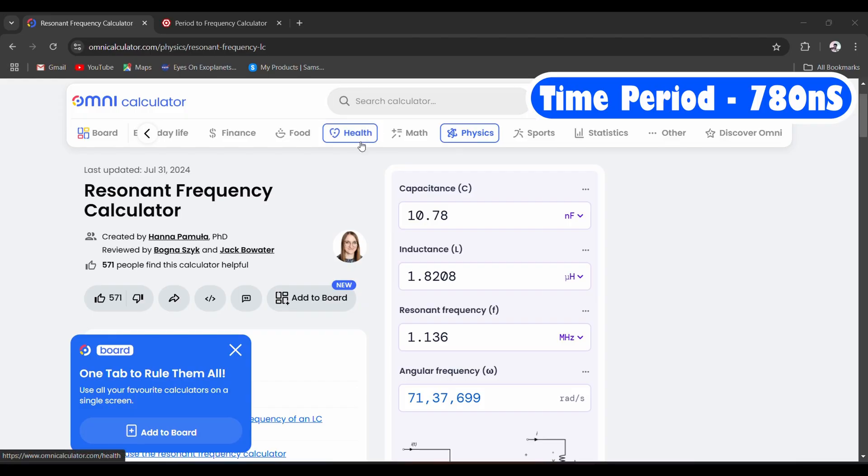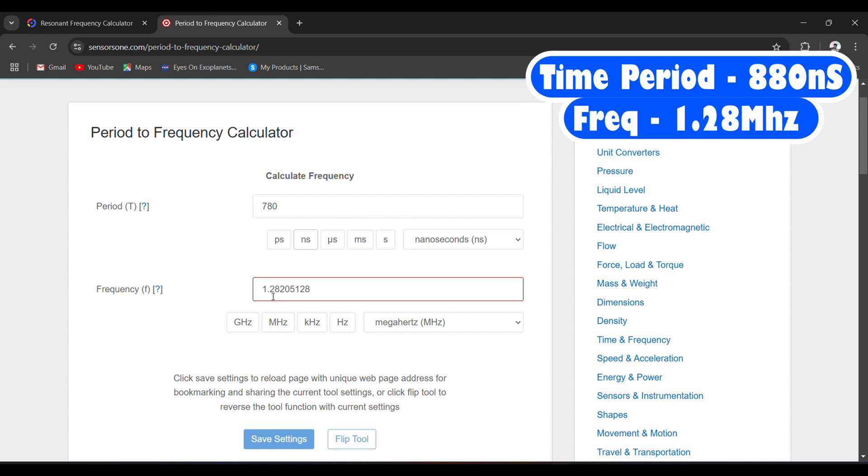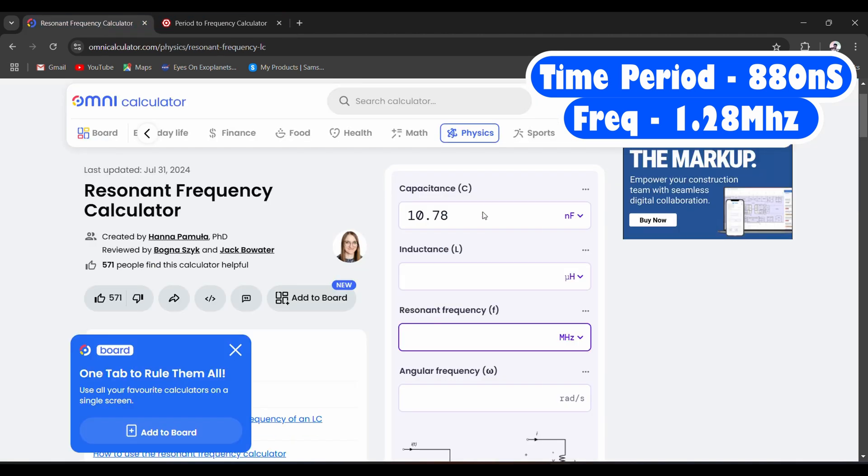This is 780 nanoseconds. Okay, so 780 nanoseconds we will put in here. This gives us 1.28 megahertz. Everything will be same, just this value will change. This value will be 1.28 megahertz.